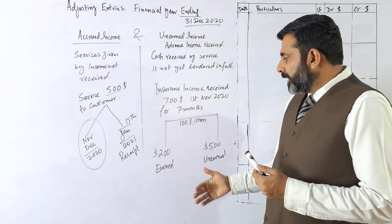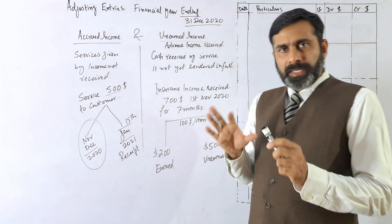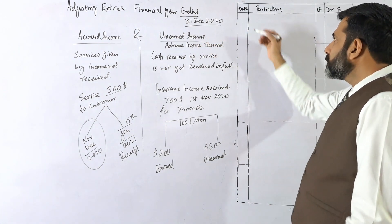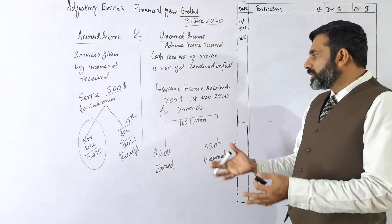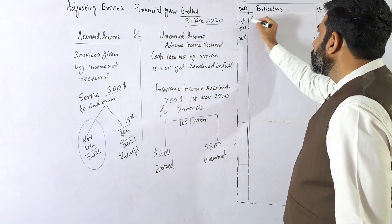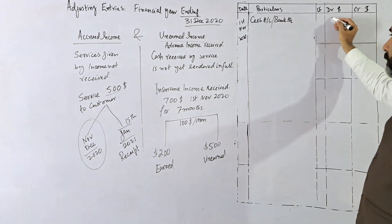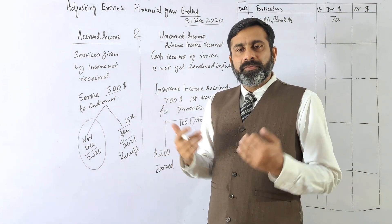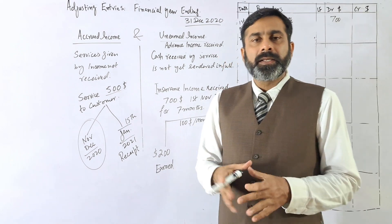This is advance income received. When the year is ending on the 31st of December, we have to consider how much is the income for this year. On the 1st of November 2020, you received the amount in cash or saved it in the bank, so the cash account or bank account will be debited by $700.